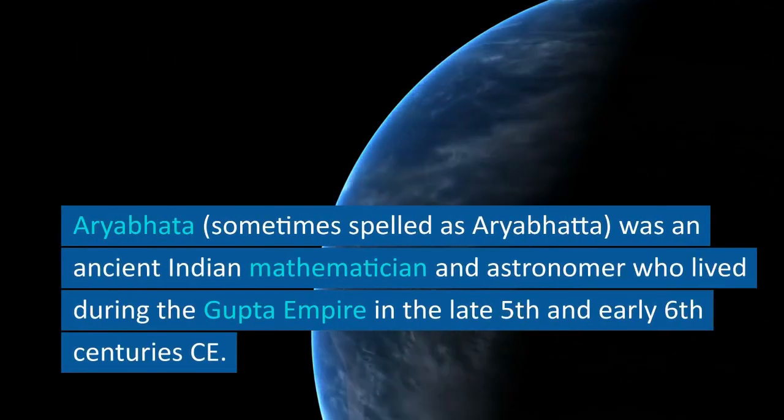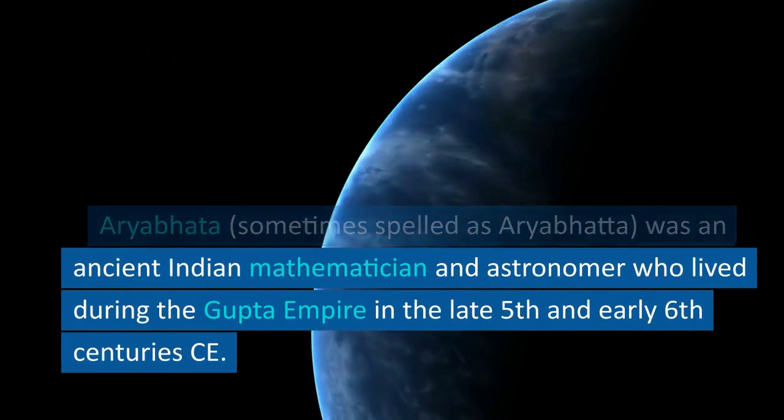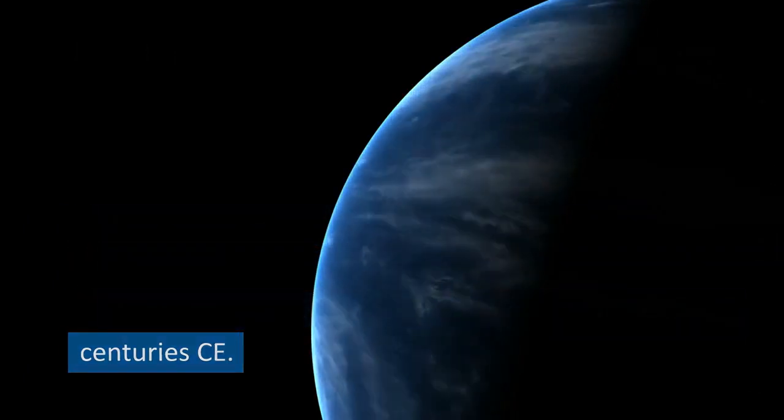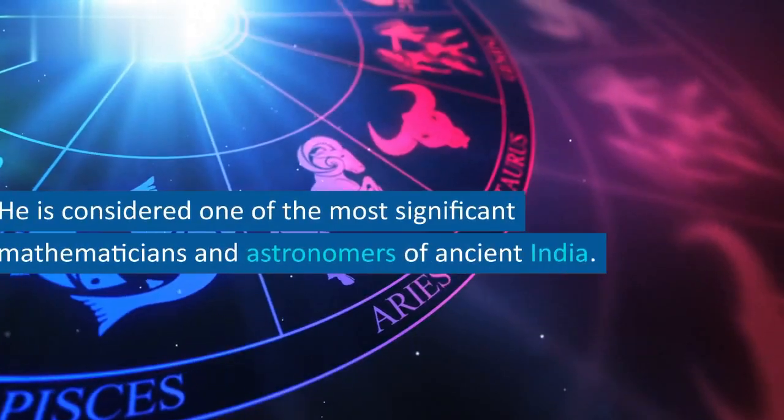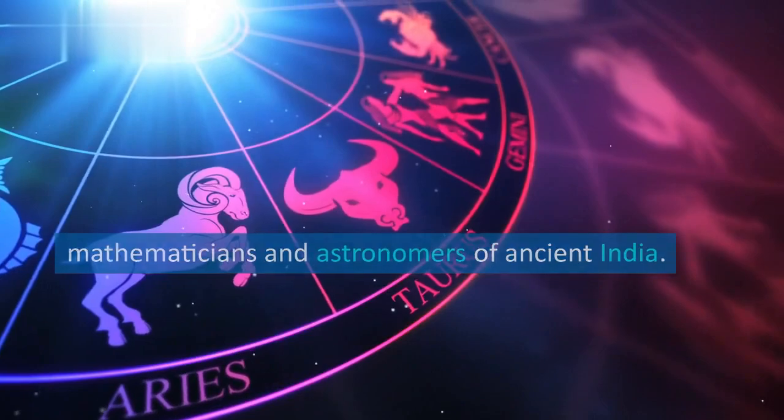Aryabhata, sometimes spelled as Aryabhata, was an ancient Indian mathematician and astronomer who lived during the Gupta Empire in the late 5th and early 6th centuries CE. He is considered one of the most significant mathematicians and astronomers of ancient India.